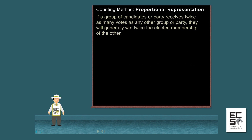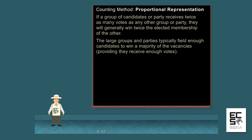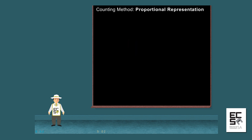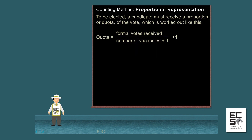If a group of candidates or party receives twice as many votes as any other group or party, they will generally win twice the elected membership of the other. The large groups and parties typically field enough candidates to win a majority of the vacancies, providing they receive enough votes. To be elected, a candidate must receive a proportion or quota of the vote, which is worked out like this.